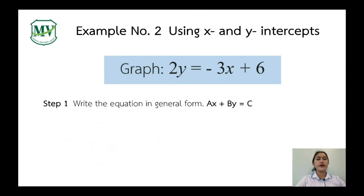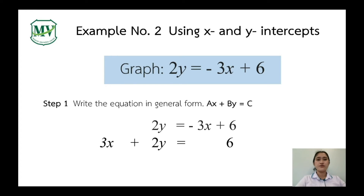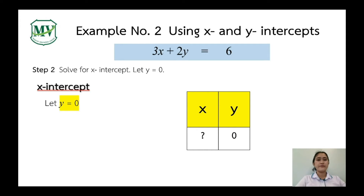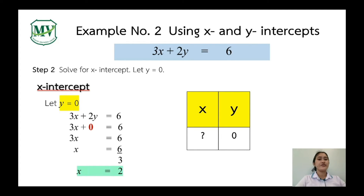Example number 2: let's graph 2y equals negative 3x plus 6. Step number 1: write the equation in general form. We transpose negative 3x to the left-hand side, giving us 3x plus 2y equals 6. Step number 2: solve for the x-intercept. Remember, y is always 0. Substituting: 3x plus 0 equals 6. Dividing both sides by 3, x equals 2. Our x-intercept is (2, 0).